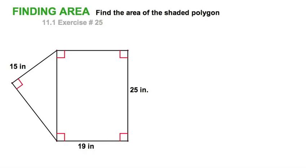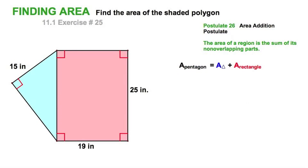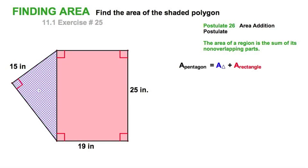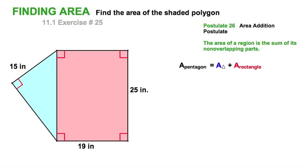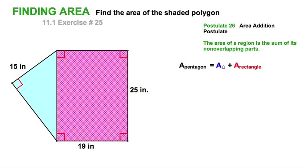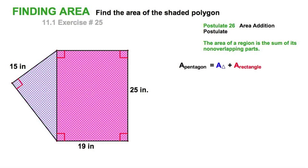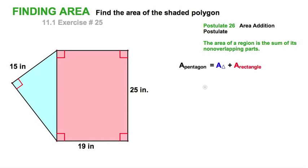But we're going to do our shading to show the two different shapes because our area addition postulate tells us that the area of this triangle, non-overlapping with the area of this rectangle, added together will give me the total area of this figure, this pentagon.